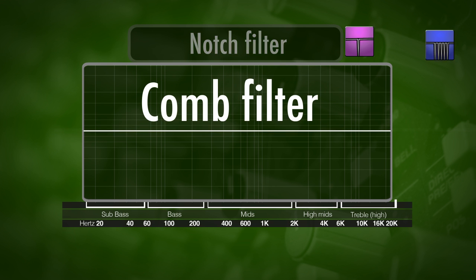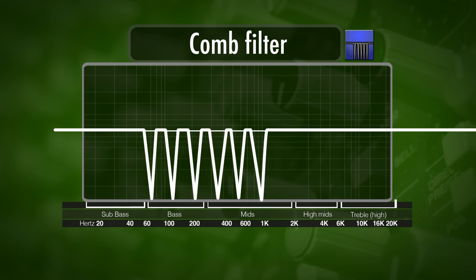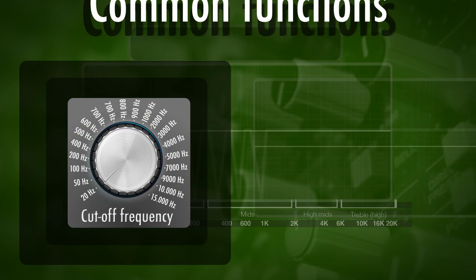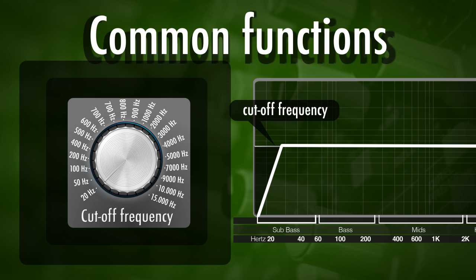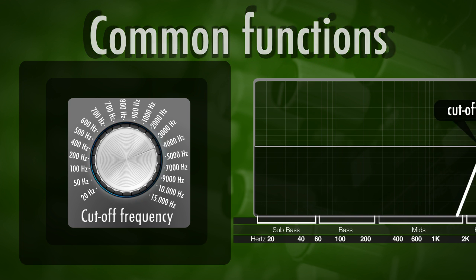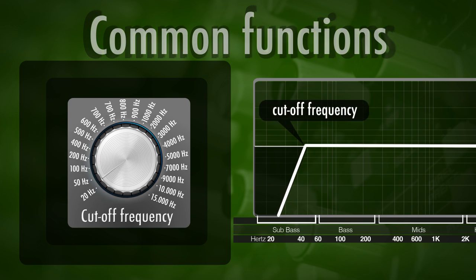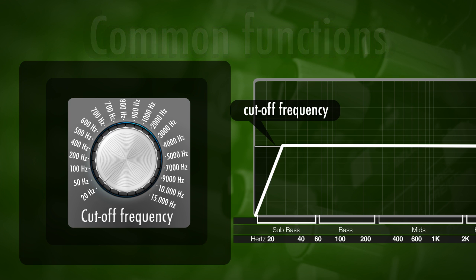Then we have a comb filter. A comb filter is a series of really small notch filters in a row, so they basically look like a comb. The most important function on these filters is the frequency parameter, which allows us to set from where the filter should work. When working with a low cut filter, the frequency parameter defines from where below the frequencies will be cut, so it's probably the first setting we apply when we insert a filter.